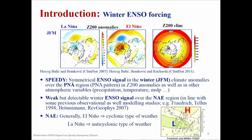In one of our first experiments, we created a large ensemble of SPDY simulations — quite long simulations — to try to isolate the ENSO signal over the Northern Hemisphere. Here you may see composites for La Niña and El Niño events for 100 hectopascals in geopotential height. The response of the Pacific North American region is quite strong. The signal is symmetric, meaning the action centers over the PNA region for La Niña and El Niño are positioned more or less over similar places. The strength of the response is proportional to the strength of the forcing.